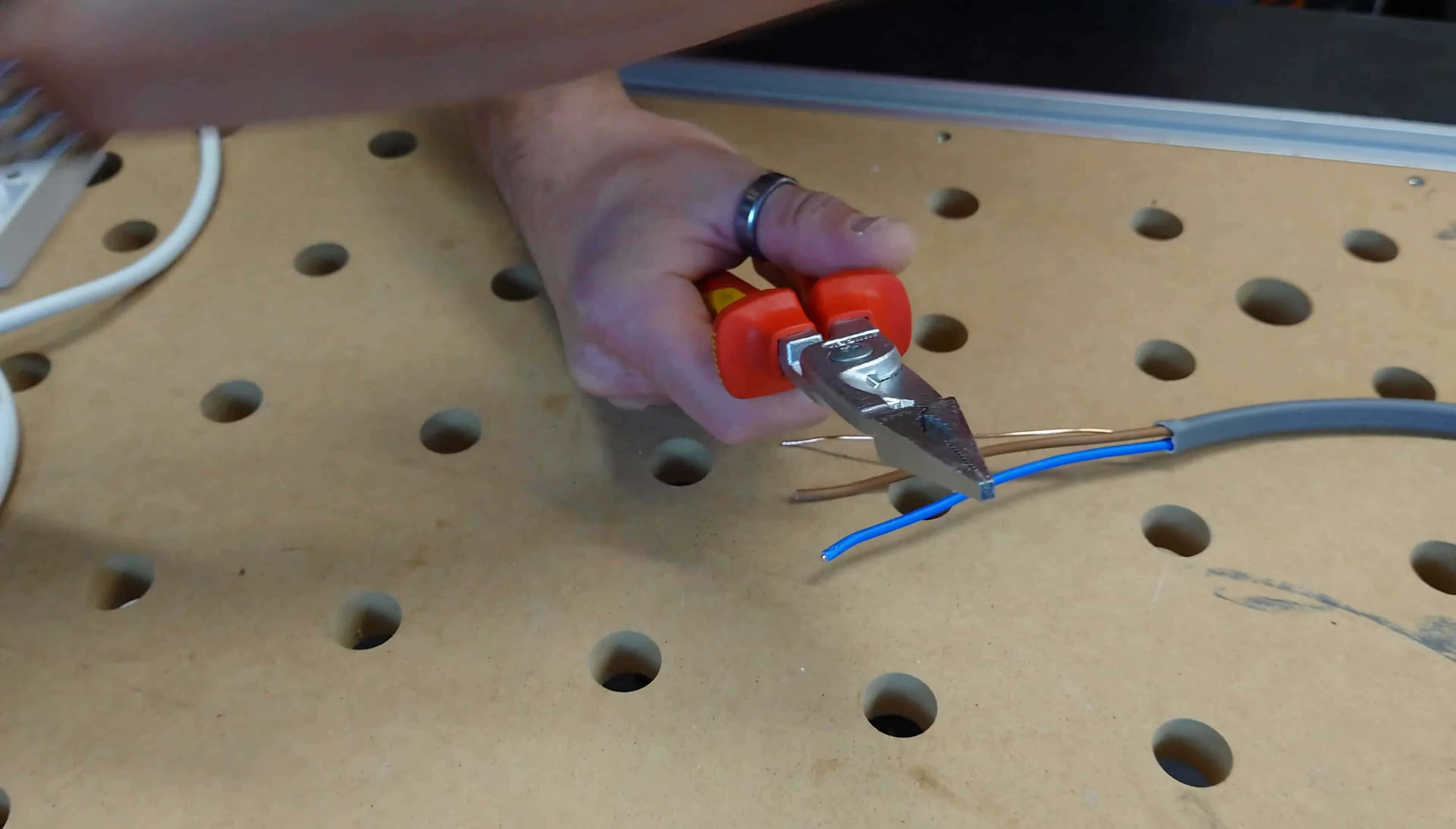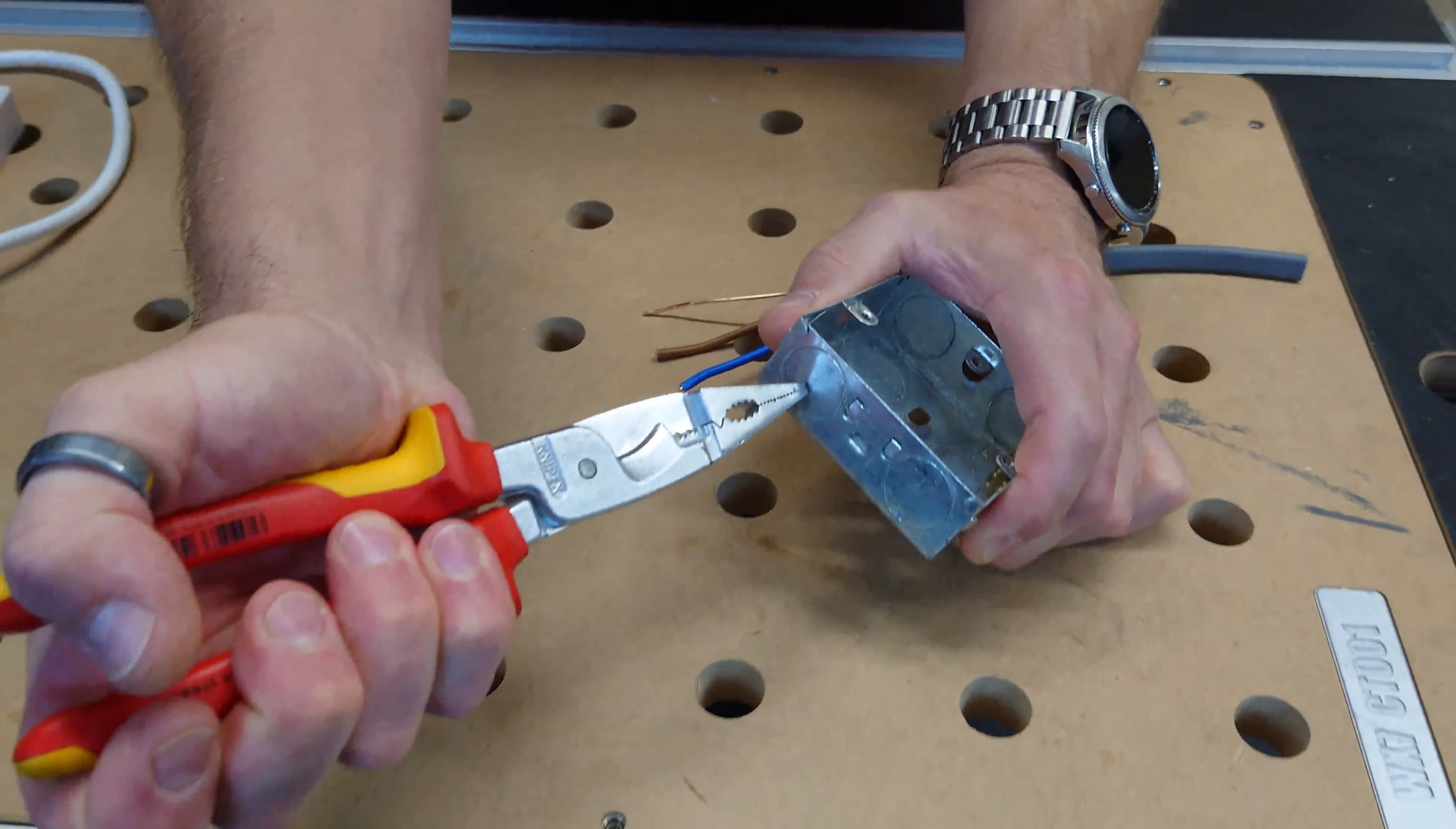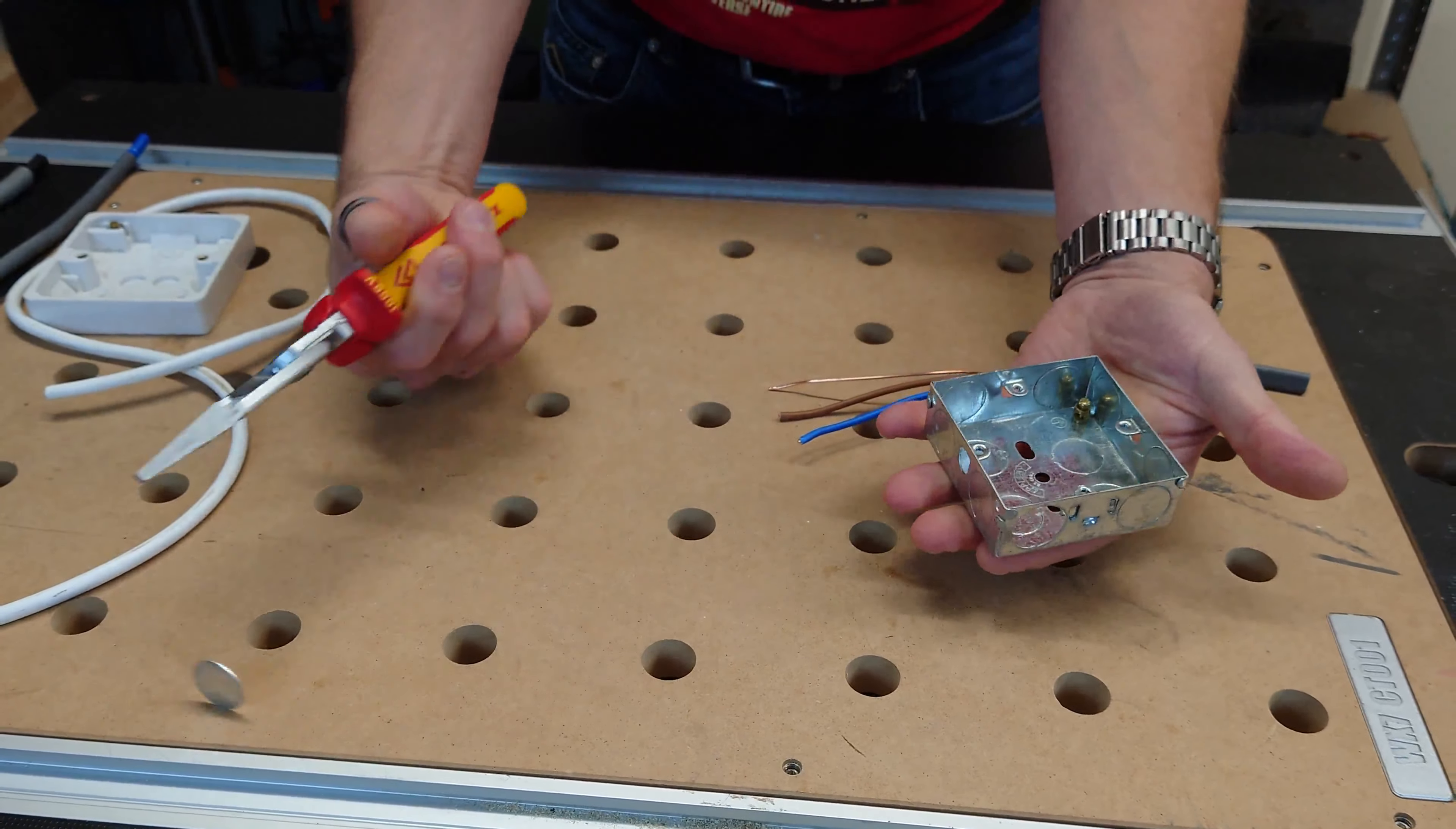With the flat nose on there, it makes it really easy to take the knockouts on metal back boxes out. That simple, one knock, straight out, grab it, twist it, and out it comes.